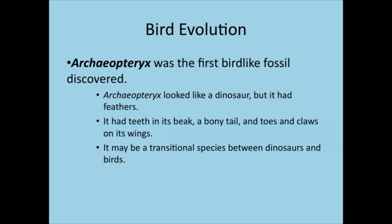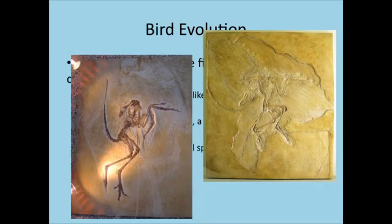Archaeopteryx is an important fossil — it was the very first bird-like fossil found. It looked like a dinosaur but had feathers. We think Archaeopteryx is a transitional form between dinosaurs and birds. It had teeth in its beak, a bony tail, and toes and claws on its wings. So it might be that transitional fossil. Here's an example of this fossil — very interesting.